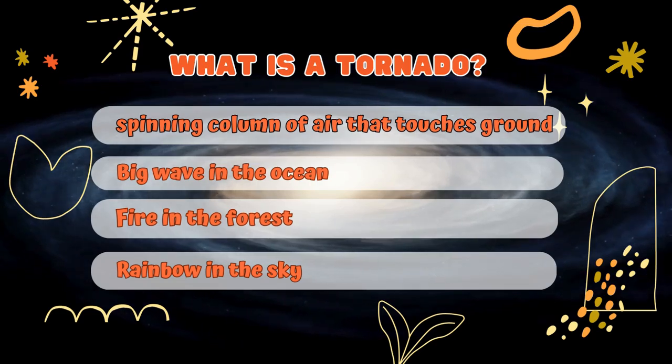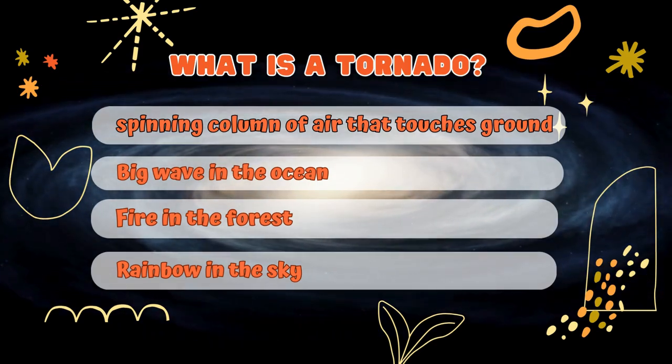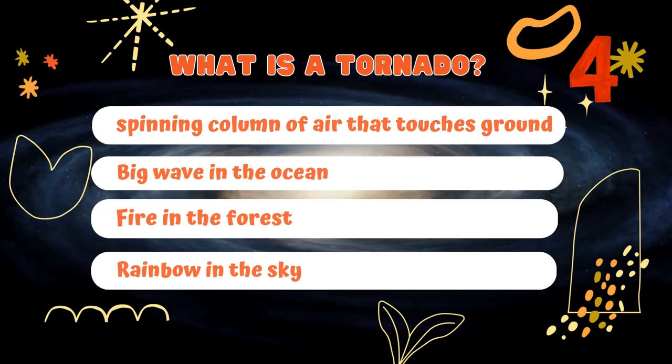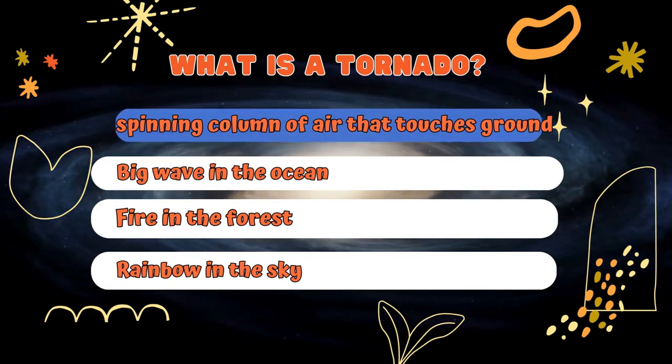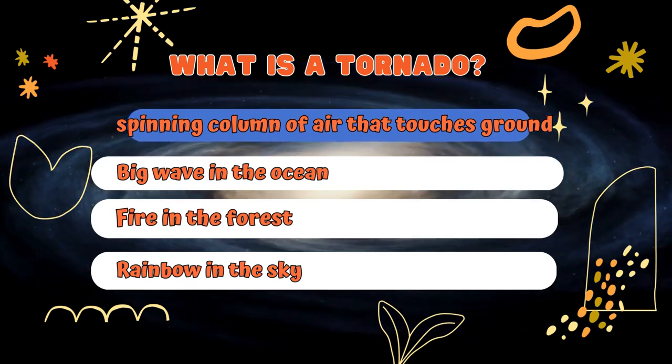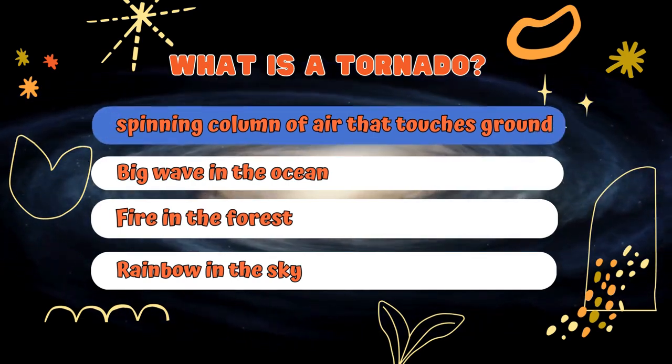Let's begin. Question 1: What is a tornado? That's right! Tornadoes are spinning columns of air that touch the ground.